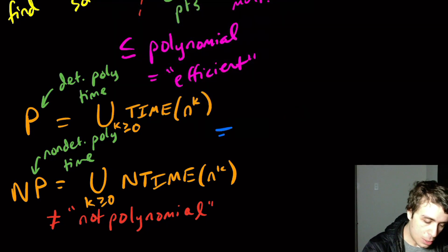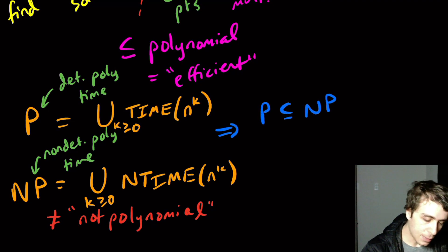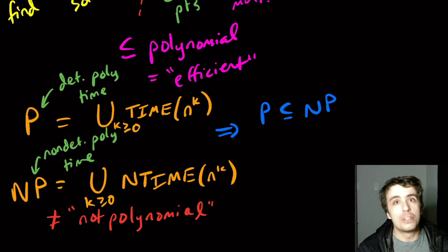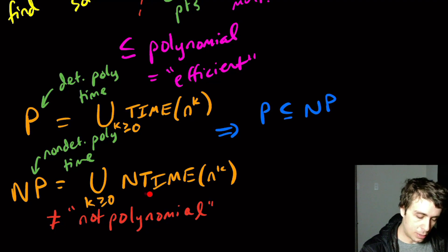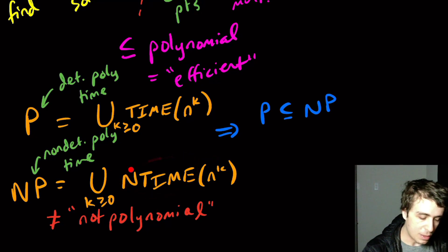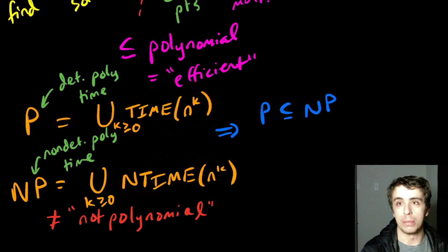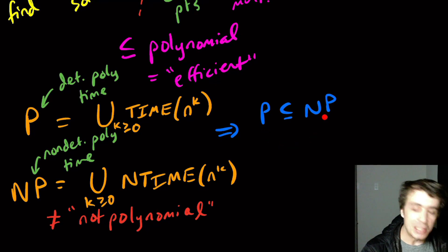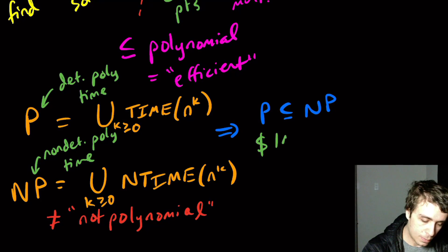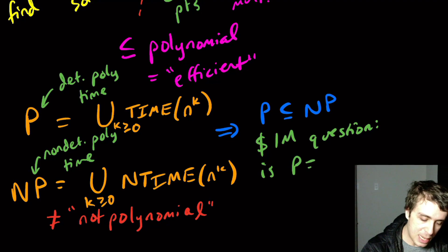One thing we can note immediately is that P is a subset of NP, because each of the TIME(n^k) is a subset of the non-deterministic one. The non-deterministic machine doesn't have to make choices. But if we allow choices, we could theoretically go faster with a non-deterministic machine versus a deterministic one. So P is a subset of NP.